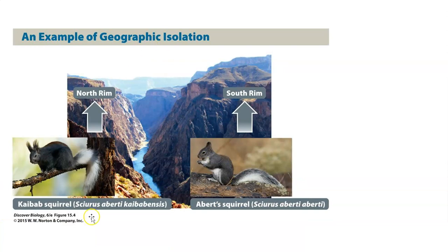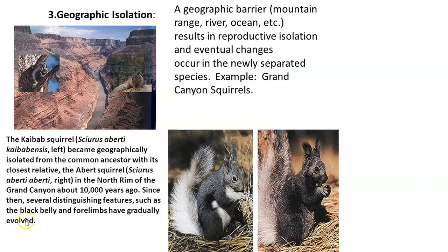You have the Kaibab squirrel and the Abert squirrel, and they're literally different species. North Rim and South Rim — this is an example of a geographic barrier: the Grand Canyon. The Grand Canyon squirrels became geographically isolated from their common ancestor, the Abert squirrel. Since then, several distinguishing features — forelimbs and coloration — have gradually evolved. You can see the differences between the two.